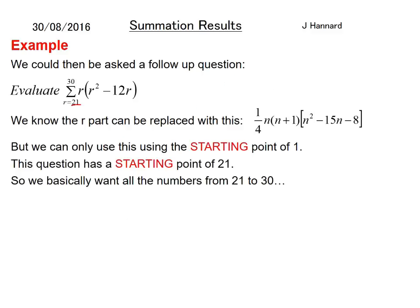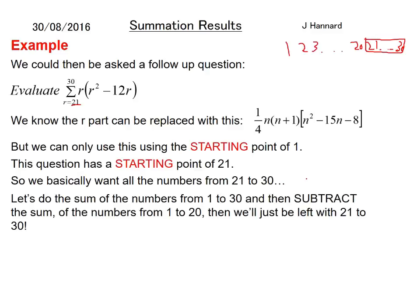So we want the numbers from 21 to 30. If you imagine that on a number line, you've got 1, 2, 3, all the way up to 20, 21, and then all the way up to 30, and we just want this bit here. How are we going to do that? Well, we want a starting point of 1, so I'm simply going to do the sum of the numbers from 1 to 30 and then subtract the sum of the numbers from 1 to 20.